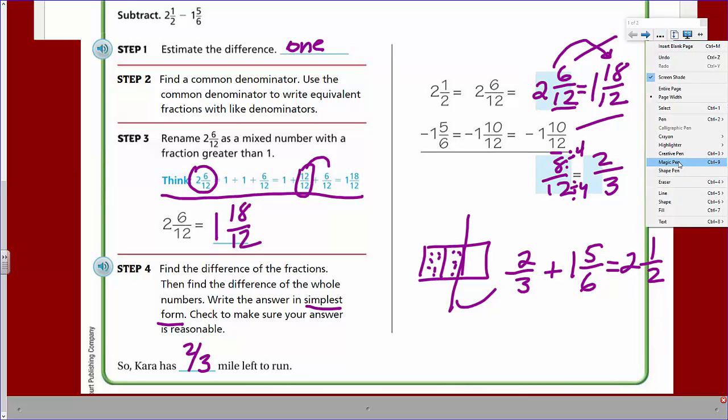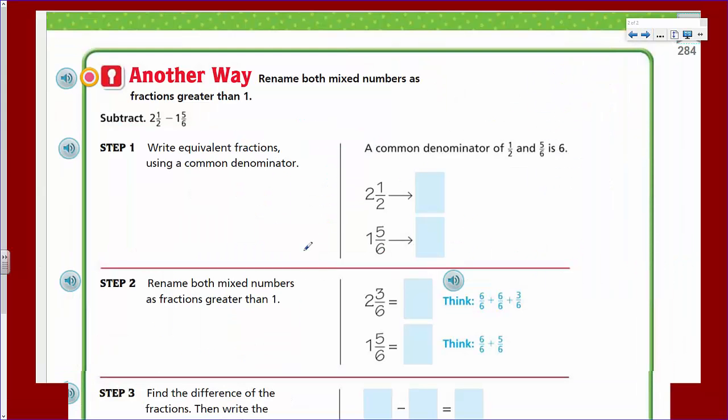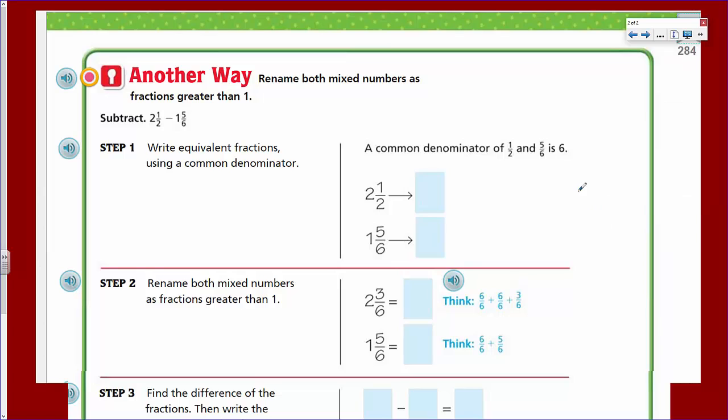And we need to do this as well. And what am I thinking? I'm thinking, hmm, let's see. I'm thinking that one right there. Can you see that? All right. Now we move on to another way. Rename both mixed numbers as fractions greater than one. We have all these steps here and, okay, so let's go ahead and get another color pen. Let me get my blue. Feeling blue. All right.